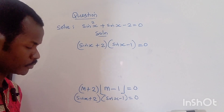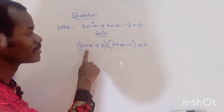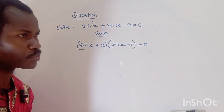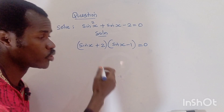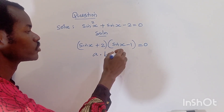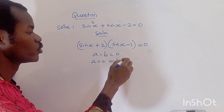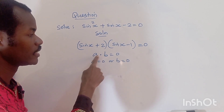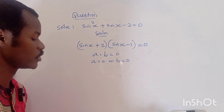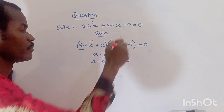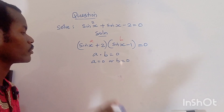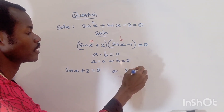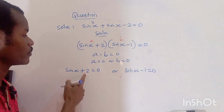If you wish, you can open the brackets to verify this. Now, remember that when a times b equals zero, it means a equals zero or b equals zero. So we set each factor to zero: sine x plus two equals zero, or sine x minus one equals zero.